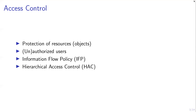Let's first talk about access control. Access control is about the protection of resources — which we will also refer to as objects — against unauthorized access by specific users. Additionally, we would also like that authorized users can access our objects, otherwise we could just delete the data. This is specified by an information flow policy, which exactly specifies which user is allowed to access the object and which user is not.